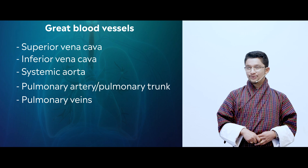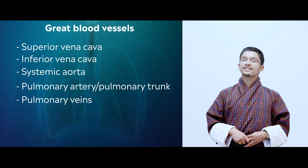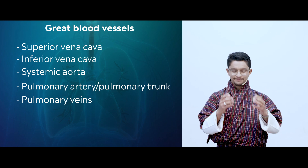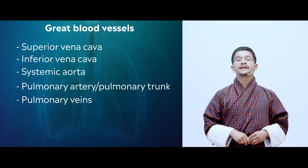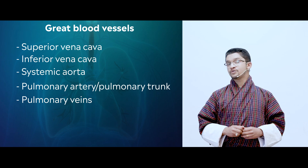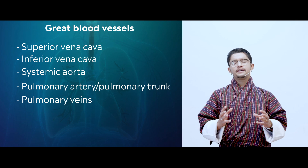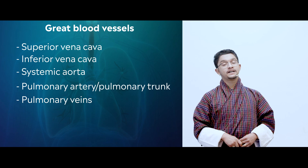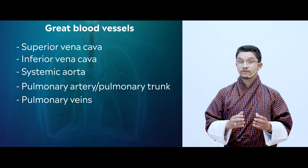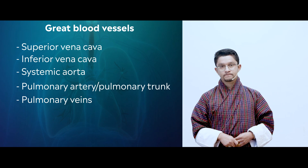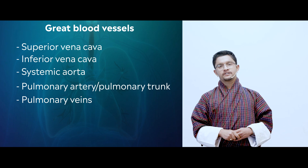Apart from that, we can also see the coronary artery and coronary sinus. The coronary artery supplies blood to the heart, and the coronary sinus brings blood from the heart walls back to the atria. They may not be included as great blood vessels; however, they can also be seen in the external structure of the heart.